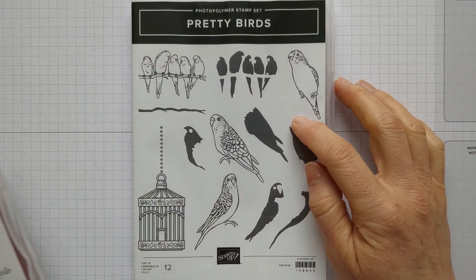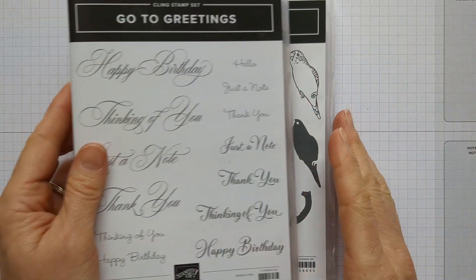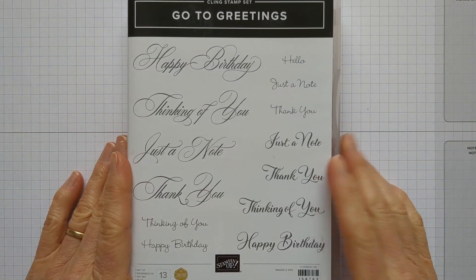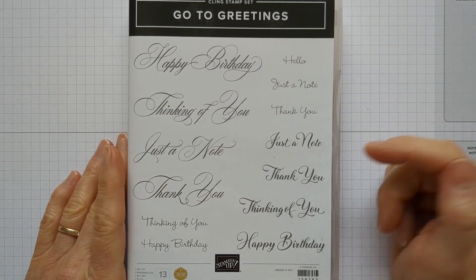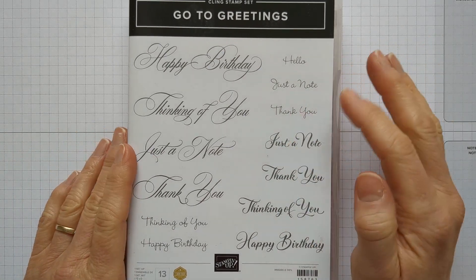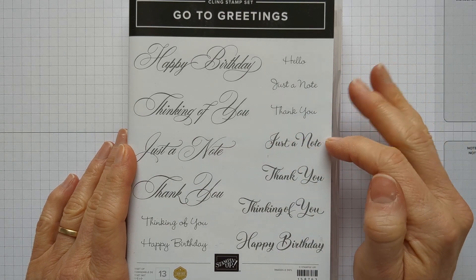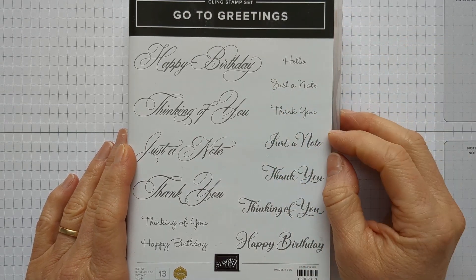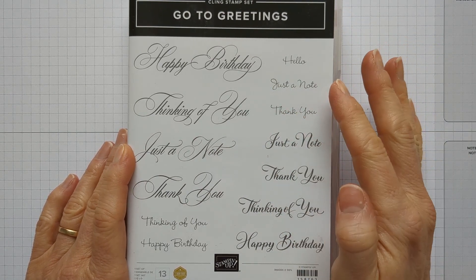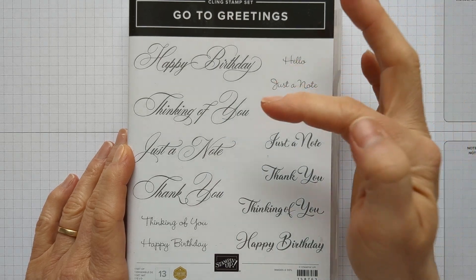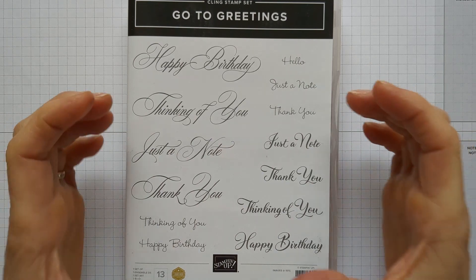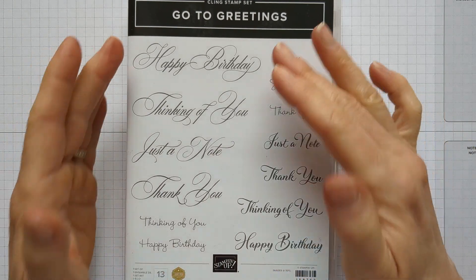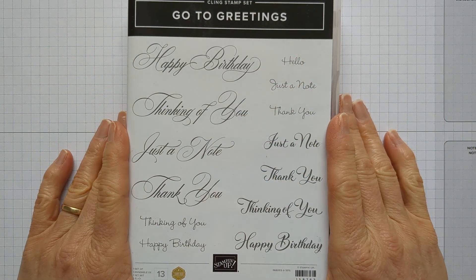Now you'll notice this one doesn't have any words that come with it, so you're going to want to pair it with go-to greetings. You guys know I love this stamp set. I use it way too much probably, but you could also dig through your other stamps and see what sentiments you want to pick out. I love this one because it's got happy birthday, thinking of you, just a note, thank you, and that's what I want when I'm giving a box of stationery. I want them to be able to use it for lots of different occasions.